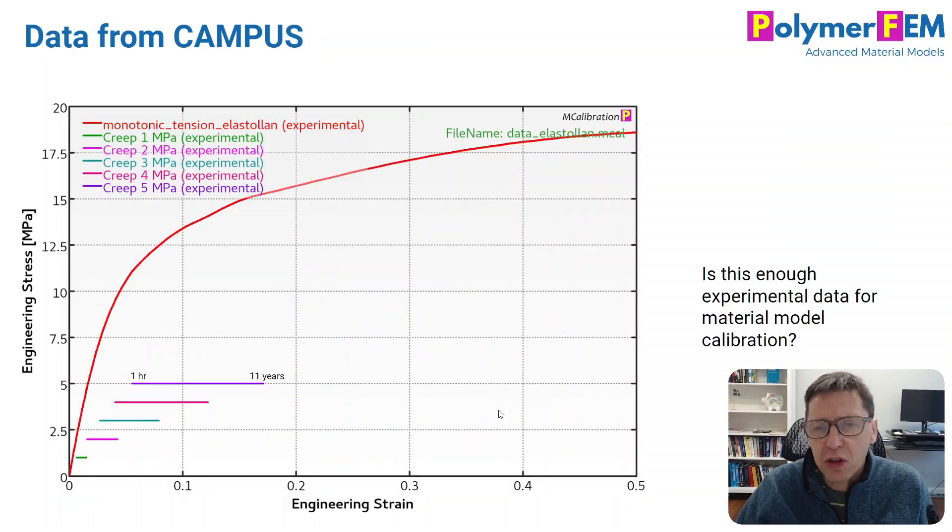I like to plot this not only as stress and strain versus time, but also on the stress-strain curve. So here's a graph that shows you the stress-strain curve in monotonic loading and these creep curves for different types of stress levels.